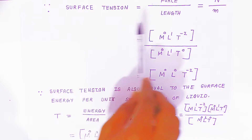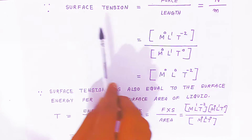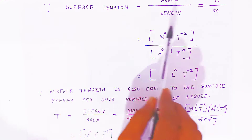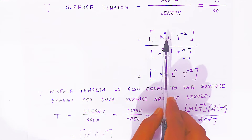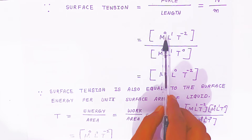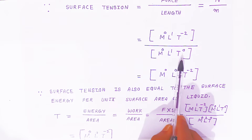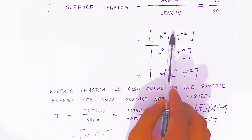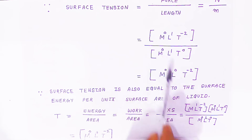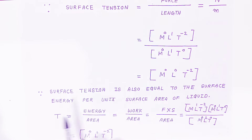Surface tension is force upon length. The unit of force is newton, so the unit of surface tension is newton per meter. For dimensions: force has dimension M¹L¹T⁻², and length has dimension L¹. So surface tension = M¹L¹T⁻² divided by L¹, which gives dimension M¹L⁰T⁻².